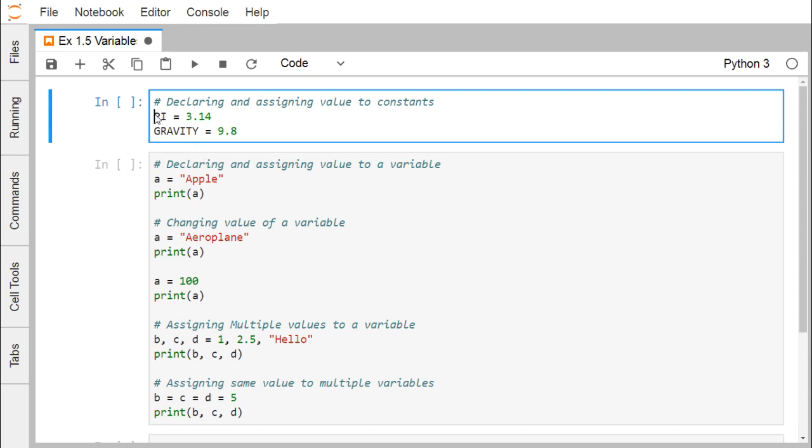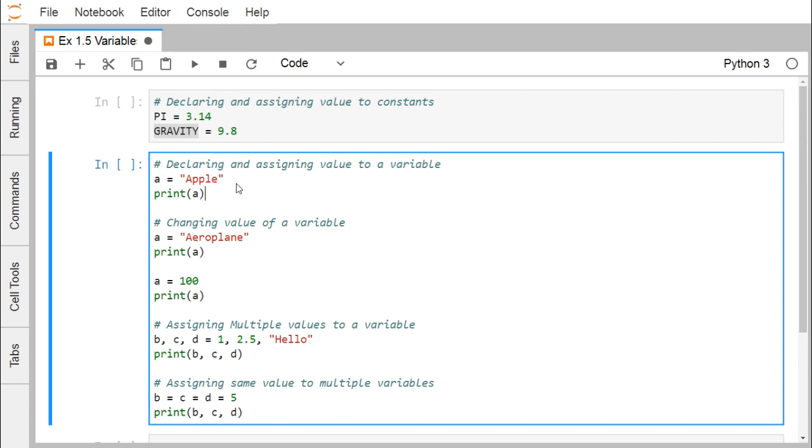Constants in Python can be defined. It is our common practice to write all the constant names in capital letters. PI = 3.14, GRAVITY = 9.8. In this way the constants can be defined in Python. Now we are going to define how the variables can be defined and how to declare variables and assign values to them.